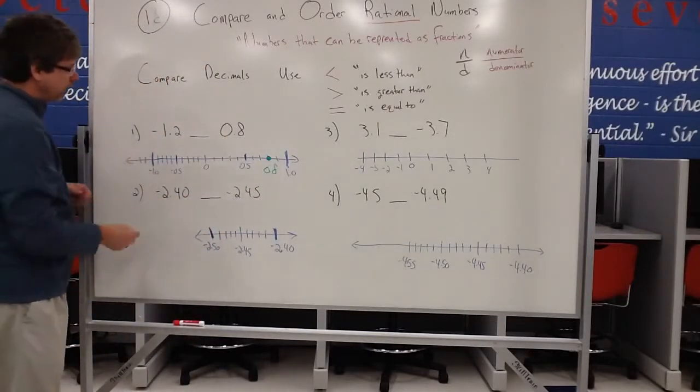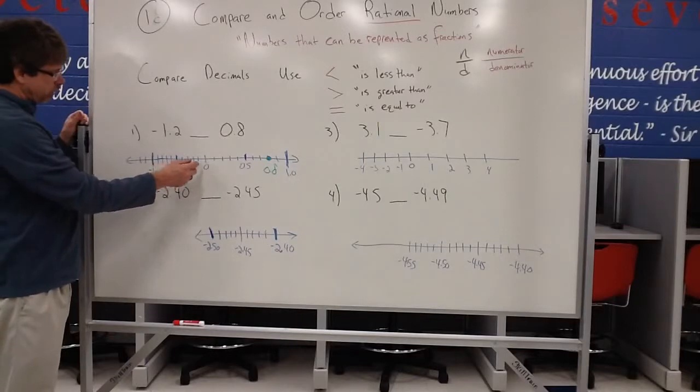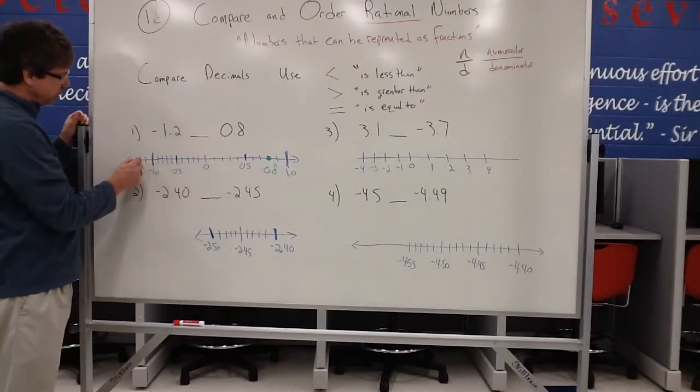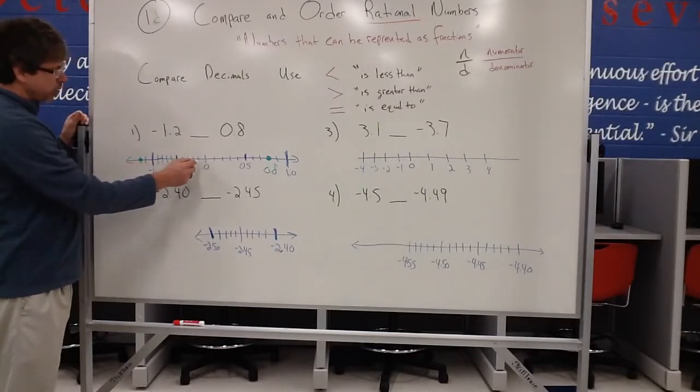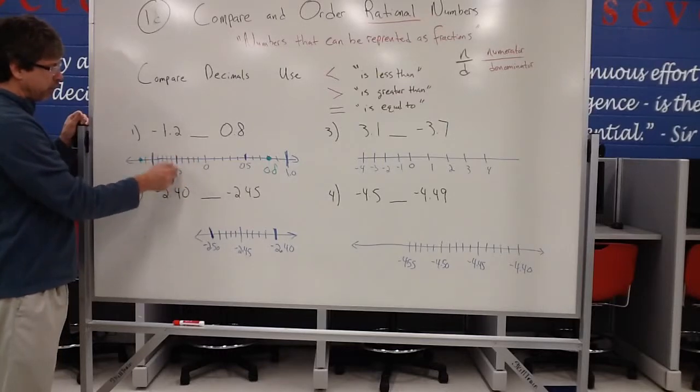Negative 1.2 or negative 1 and 2 tenths. So there's negative 1 and 2 tenths would be over here at this spot. So we were counting by tenths.